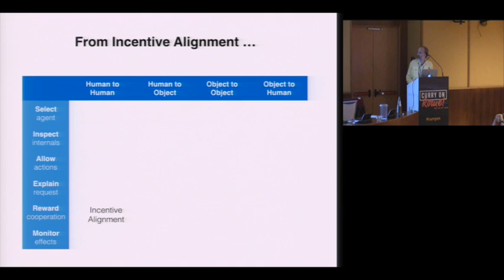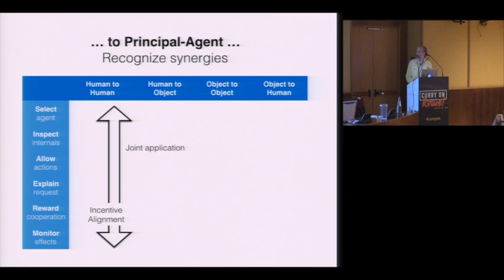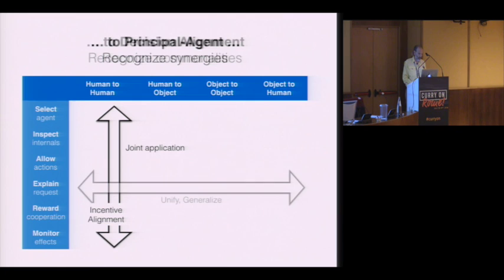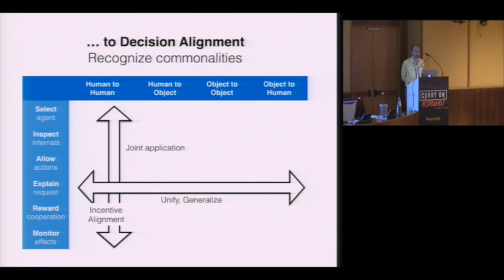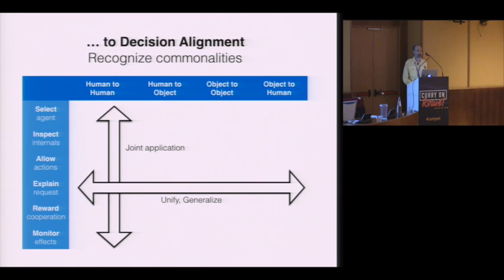Economists first examined shaping these relationships purely using incentives, found that wasn't adequate, and expanded to take into account these other steps in the relationship — all of which are tools that can jointly be brought to bear by the principal to help shape the agent's behavior. What we're doing is recognizing commonalities between what they describe and what we've always done in computer science, in order to generalize this framework to cover both worlds and reason about a mixed world. In so doing, we drop the special focus on incentive alignment and just consider it to be one tool out of many.